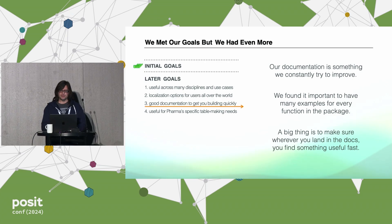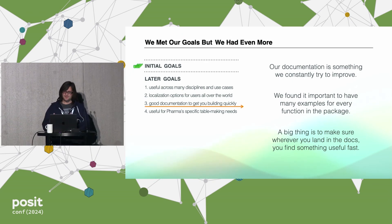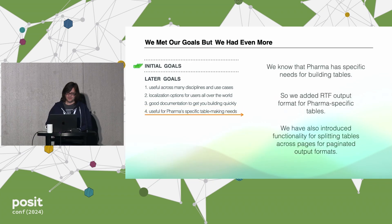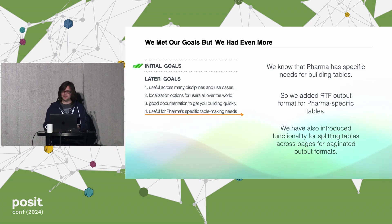Good documentation is super important to us — we're always trying to improve it. We found it important to have many examples for every function in the package. If you land on a page, you should find something useful fast, whether it's descriptive text or examples close to what you need. We also talked to a lot of people in pharma, who have specific needs for tables. That's why we added RTF support initially. More recently we included functionality for splitting tables across pages for paginated output formats.